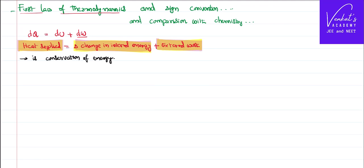While we are applying this first law of thermodynamics, there is a standard sign convention — when something has to be taken as positive and when something has to be taken as negative. Let us see what that sign convention is.